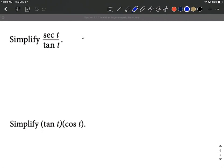So on this first one we have secant of t over tangent of t. What I would suggest is we rewrite secant of t as one over cosine of t. That's a reciprocal identity. And then tangent we can rewrite that with sine over cosine, so sine of t over cosine of t.